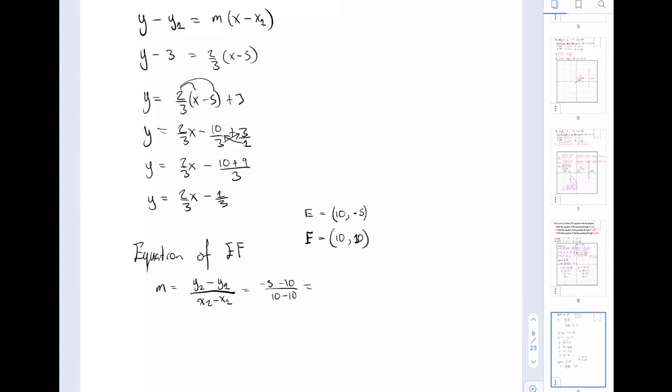What we realize here is that we end up with negative 15 over 0, so we have no gradient. We cannot find the gradient here because the gradient is undefined. Whenever we're dividing by 0, we say that the number is undefined. Whenever the gradient is undefined, it must be that we have a vertical line.